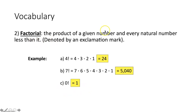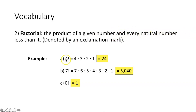A factorial is the product of a given number and every natural number less than that, denoted by an exclamation mark. Natural numbers are counting numbers starting at one. So four factorial means four times three times two times one, which gives you 24.